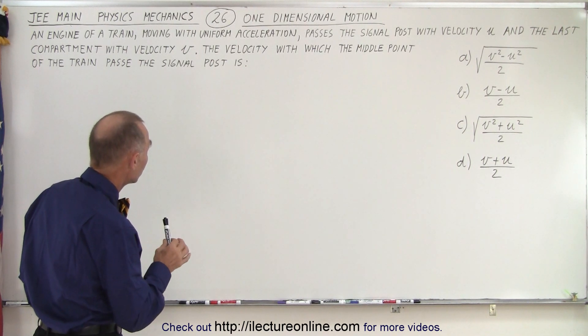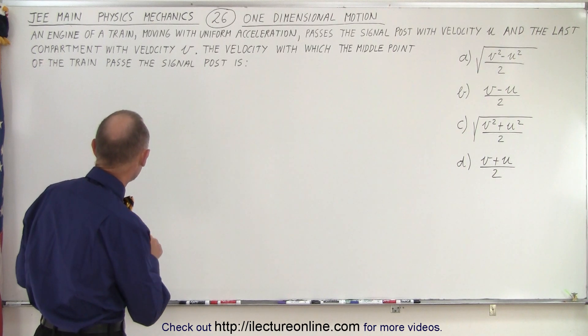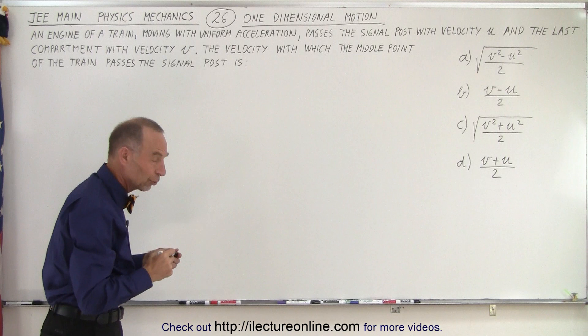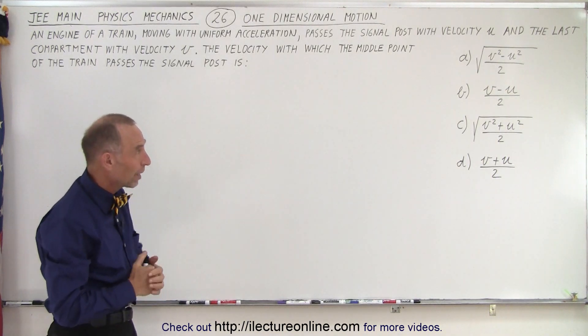The velocity with which the middle point of the train passes the signal post is, and they give us four possible answers.